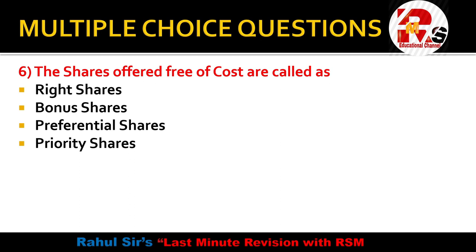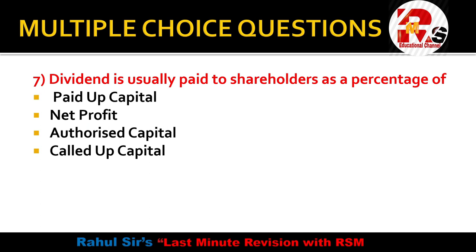Question: The shares offered free of cost are called — Right Shares, Bonus Shares, Preferential Shares, or Priority Shares? If employees get shares, we call them sweat equity shares. If we give shares to existing shareholders at a ratio, those are right shares. If shares are given free of cost to existing shareholders, those are called Bonus Shares. Bonus shares are always issued to equity shareholders.